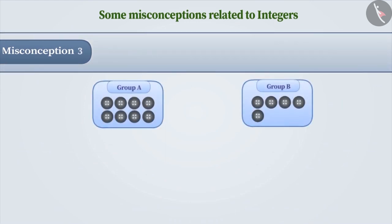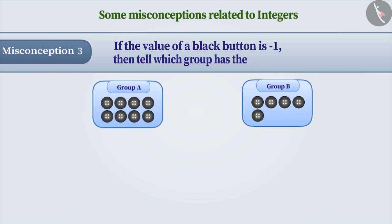Misconception 3. There are some black buttons here. If the value of one black button is minus 1, then tell me which group has the largest value.